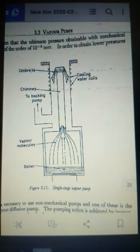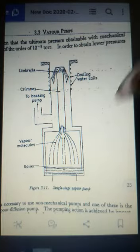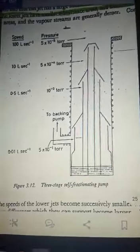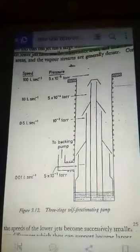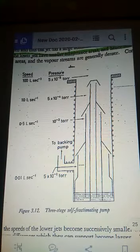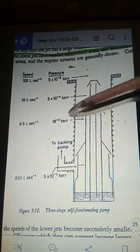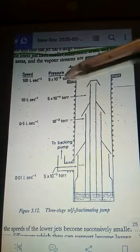That's why the exhaust rate is very low. That's why we use multi-stage vapor pump. This shows the speed range and for different jets there is a variation in the pressure.